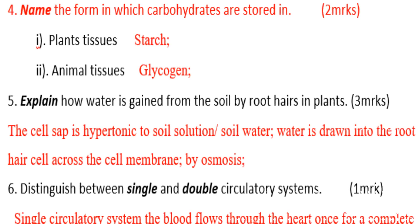Name the form in which carbohydrates are stored: number one, in plant tissues — starch; number two, in animal tissues — glycogen.